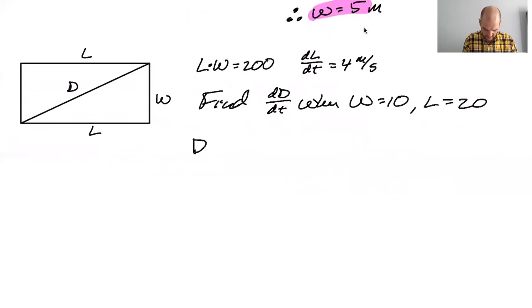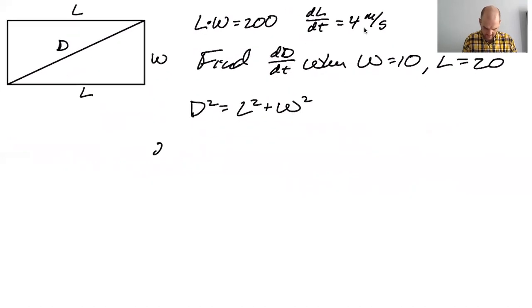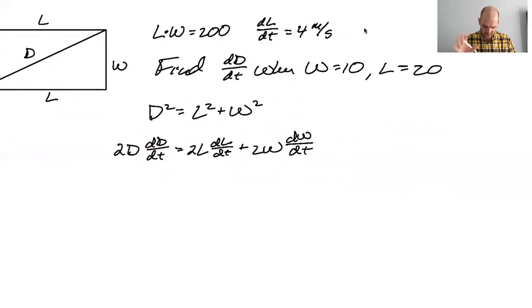I also know that D squared equals L squared plus W squared. So then 2D, this, I think of this as like the classic related rates problem because Pythagorean theorem, the derivative of the Pythagorean theorem with respect to time strikes me as like, you know, one of the, one of the real basic problems.